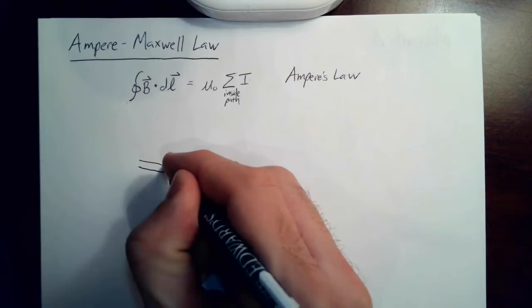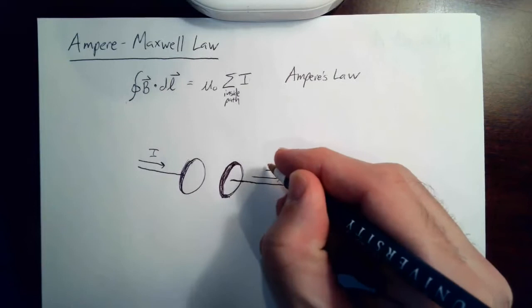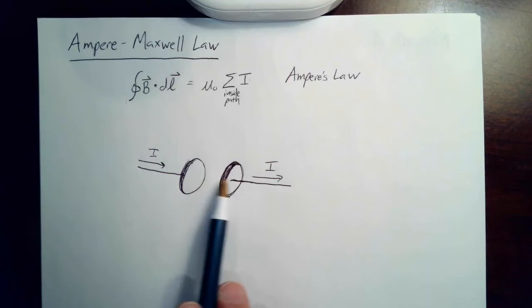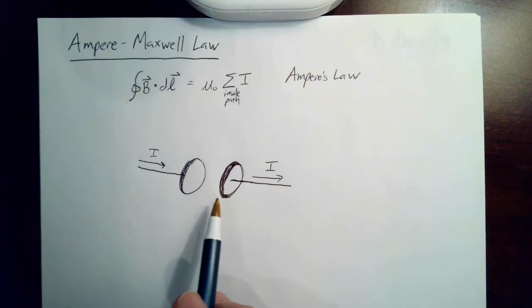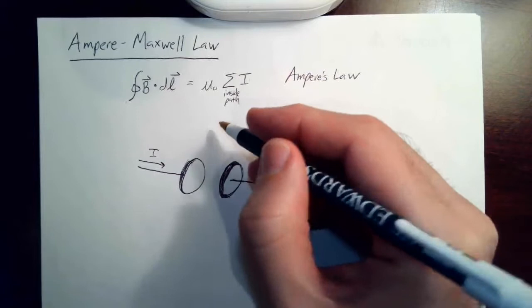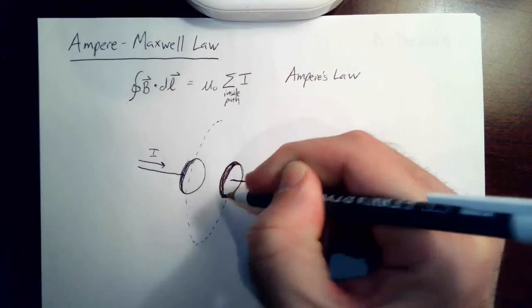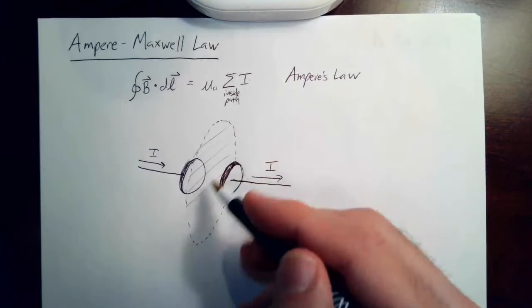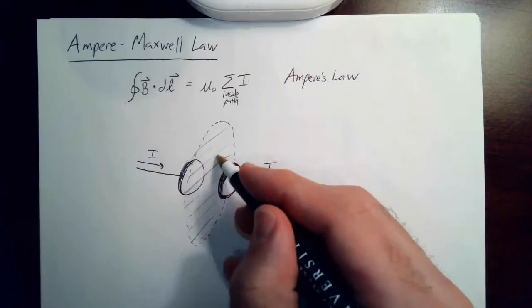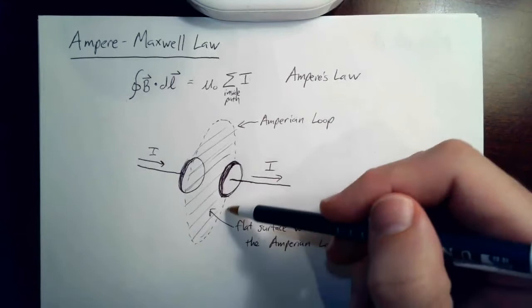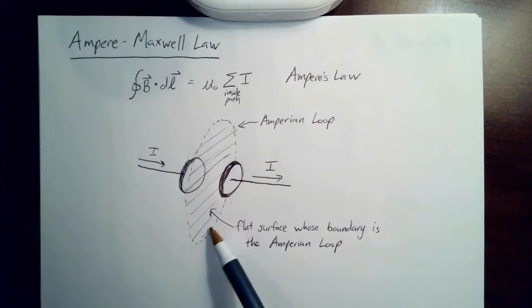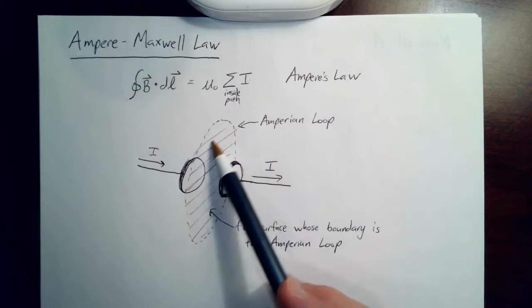So now let me show you how this gives us a contradiction. I've drawn a parallel plate capacitor with a current I going in one side and a current I coming out the other side. As we discussed before, there's an electric field between the two plates but no current between them. I'm going to draw my Amperian loop so that I create a disk that cuts through the middle in between the two parallel plates. This dashed circle is the Amperian loop, and the flat surface whose boundary is the loop is the closed path in the equation.